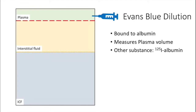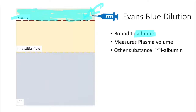For plasma volume measurement, we use a dye called Evans Blue, because Evans Blue is tightly bound to albumin. Once injected, it stays only within the plasma, so measuring the final concentration gives an estimate of plasma volume. Another substance used is iodine-labeled albumin.